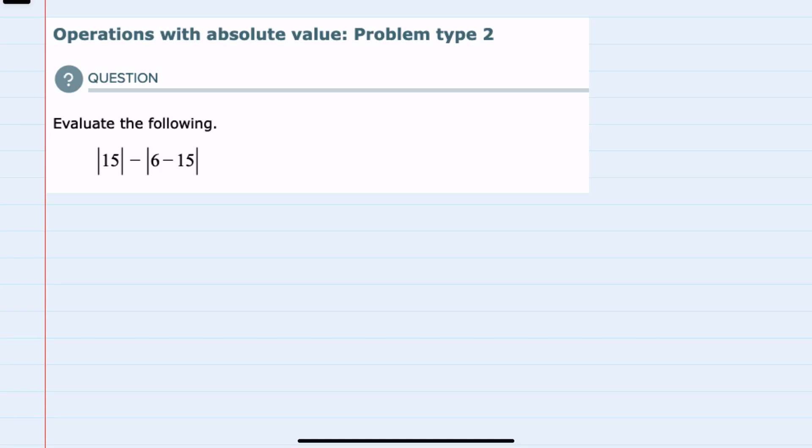In this video I'll be helping you with the Alex problem type called operations with absolute value problem type 2. In this example we're asked to evaluate, and following the order of operations we would first recognize that the absolute value can work as a grouping symbol.